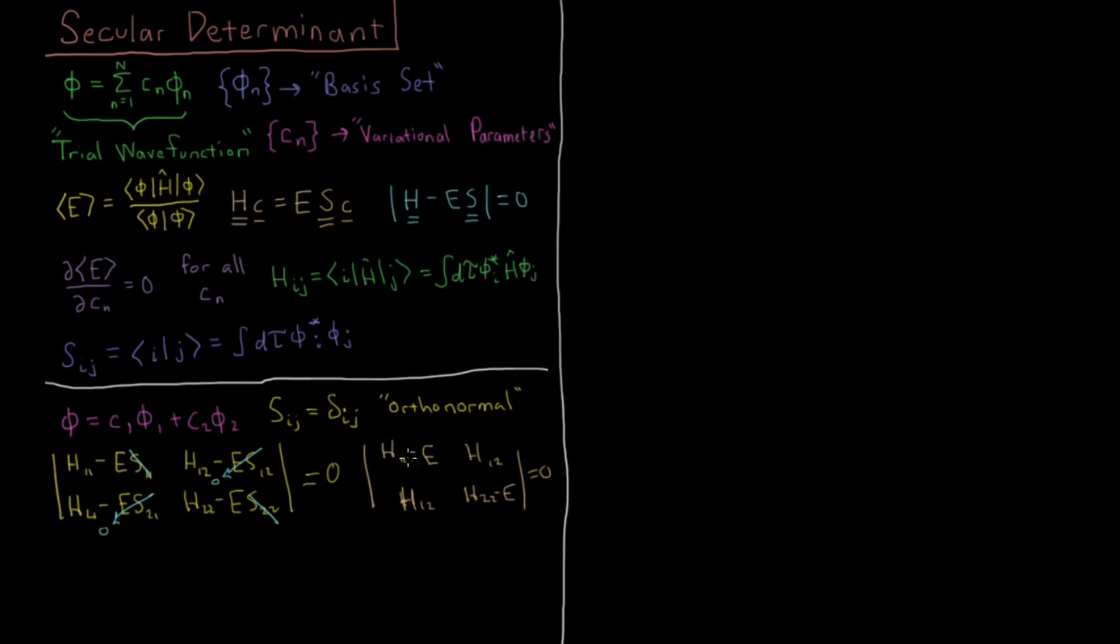So what does it look like when we expand out this determinant? Well, that's just going to be this diagonal, so this times this, minus this times this. That's an expansion of a 2 by 2 determinant. So we're going to have (H11 - E) times (H22 - E), then minus H12 times H12, and all this is going to be equal to 0.